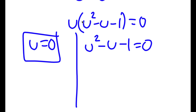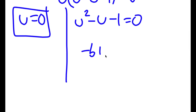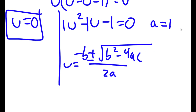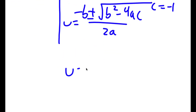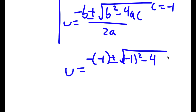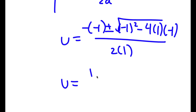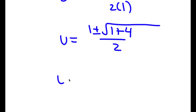So as you see, we already have one solution for u. Now to solve u squared minus u minus 1 equals 0, I'm going to use the quadratic formula: negative b plus or minus the square root of b squared minus 4ac, all over 2a. In this case, a is 1, b is negative 1, and c is negative 1. So I have u is equal to 1 plus or minus the square root of 5, all over 2.